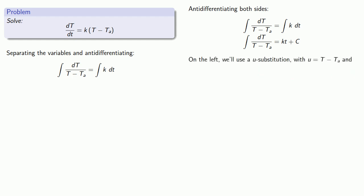On the left, we'll use a u-substitution, with u equals T minus T sub a. And remember, T sub a is a constant, so du is going to be dT, and we can rewrite our left-hand side. Then find the anti-derivative.